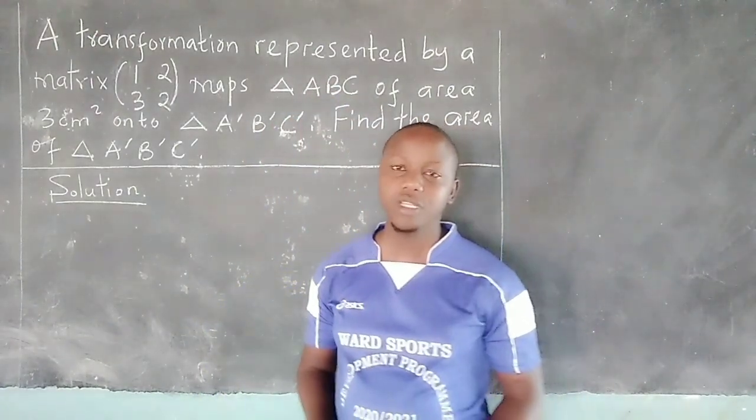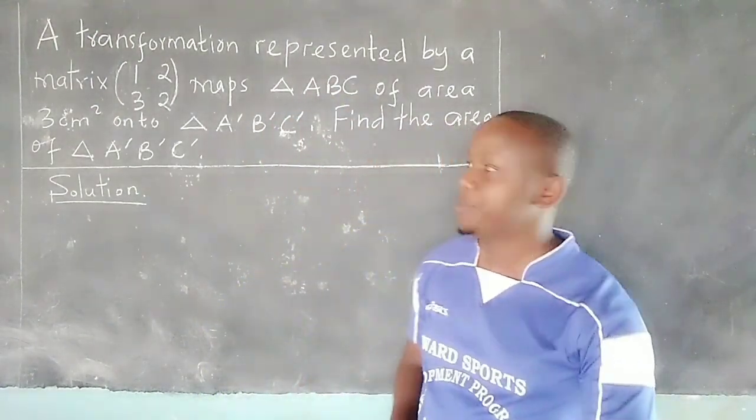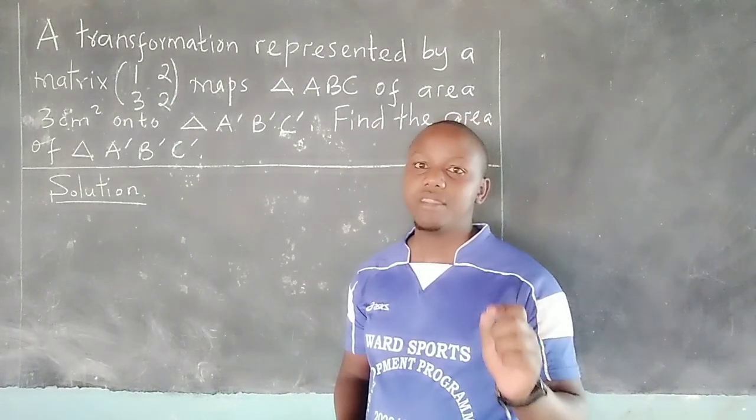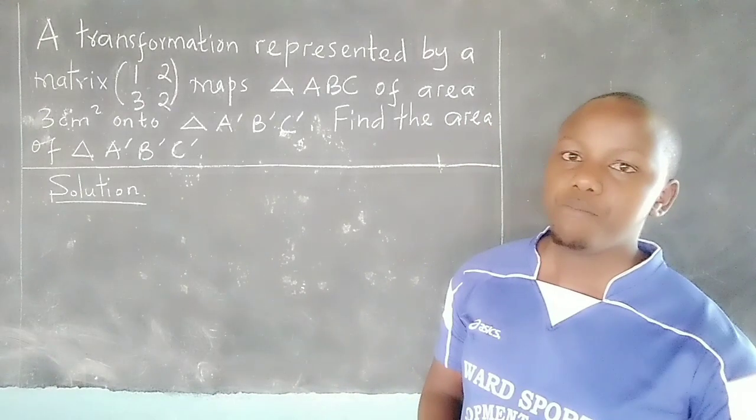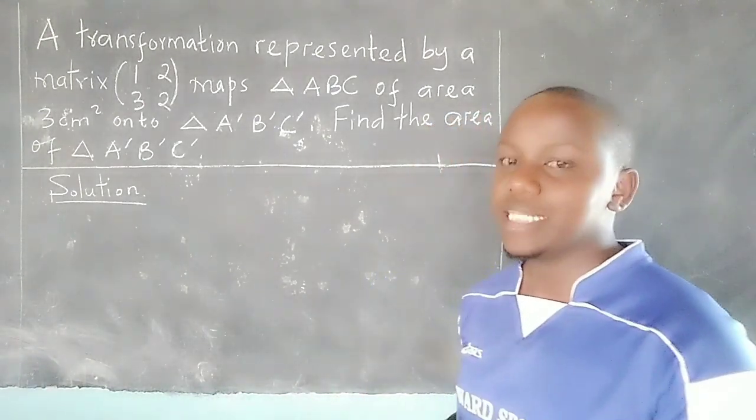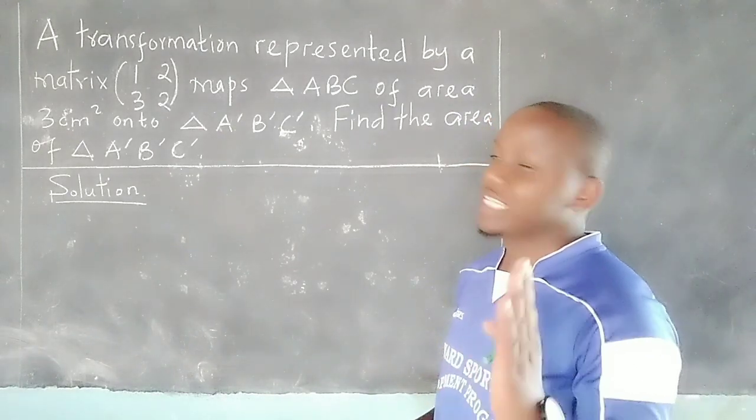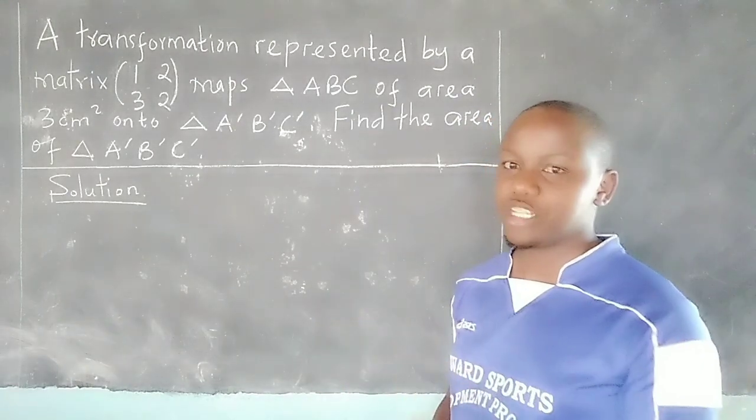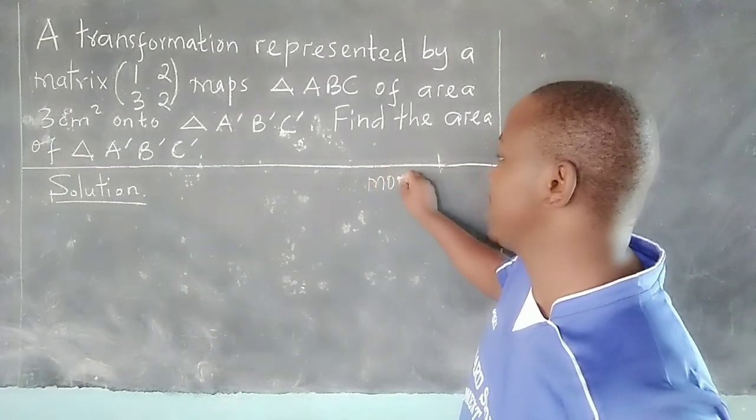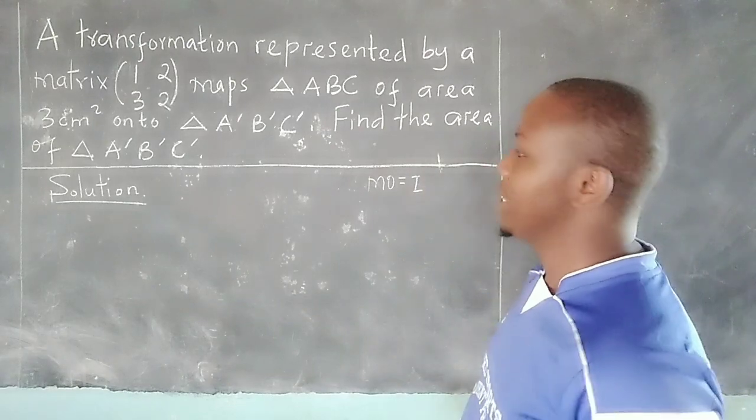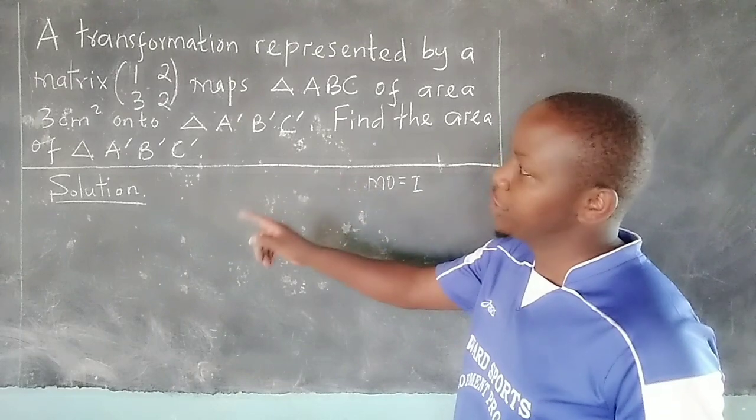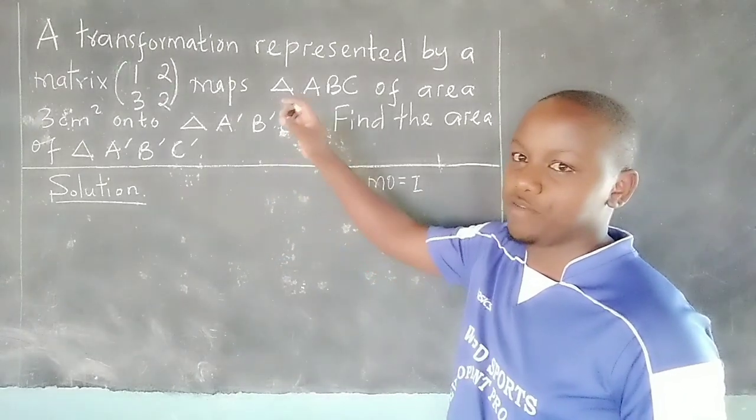Welcome for yet another lesson. We are going to study the relationship between the determinant of a matrix and the area scale factor between an object and its image. It is known that a transformation can be represented by a matrix, in that when a matrix multiplies an object, we get its image. Therefore, several matrices can be used to represent specific transformations.